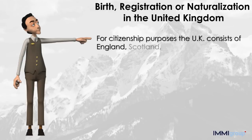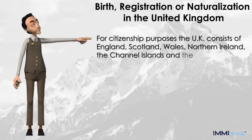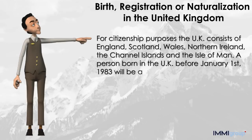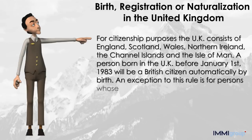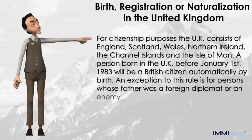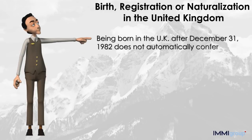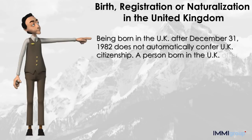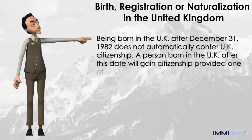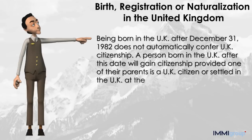For citizenship purposes, the UK consists of England, Scotland, Wales, Northern Ireland, the Channel Islands, and the Isle of Man. A person born in the UK before January 1st, 1983 will be a British citizen automatically by birth. An exception is for persons whose father was a foreign diplomat or an enemy alien at the time of birth. Being born in the UK after December 31st, 1982 does not automatically confer UK citizenship.